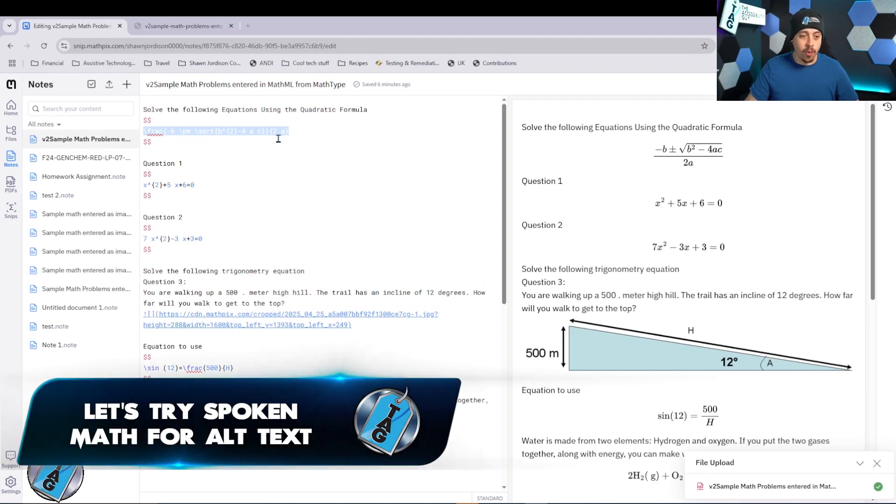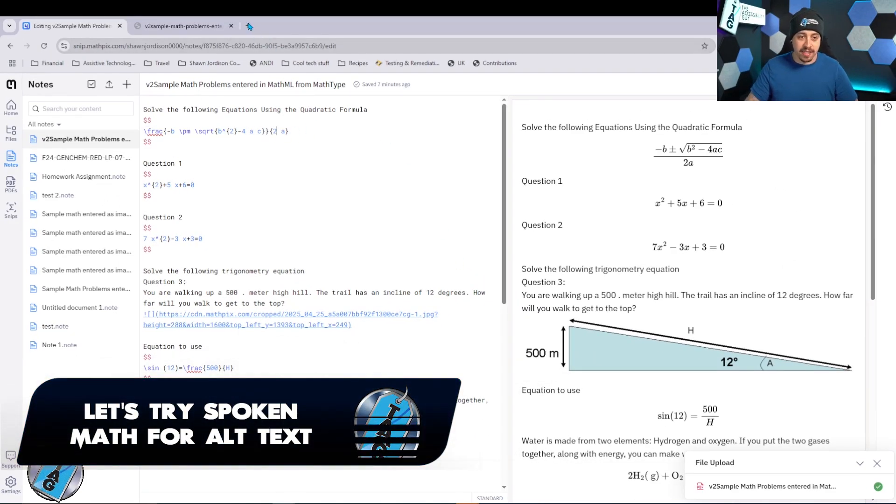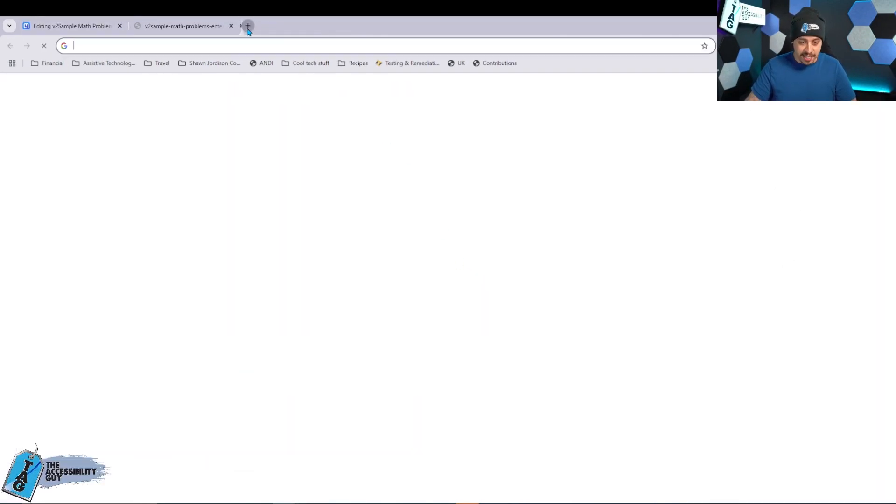One other thing that I wanted to test was to see if we can get spoken math as the alt text. So I'm going to take this equation, I'm going to copy it and let's throw it into perplexity. I'm going to say, can you generate spoken math for this equation?